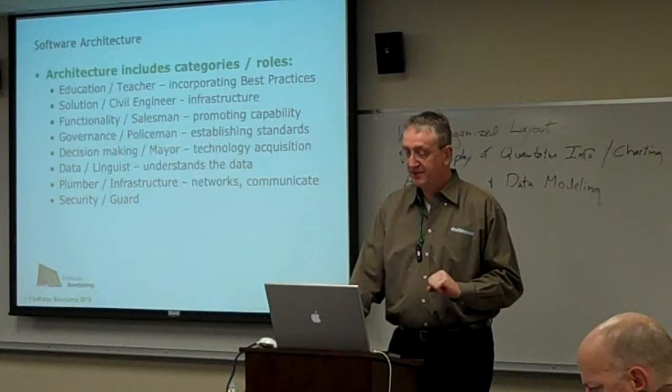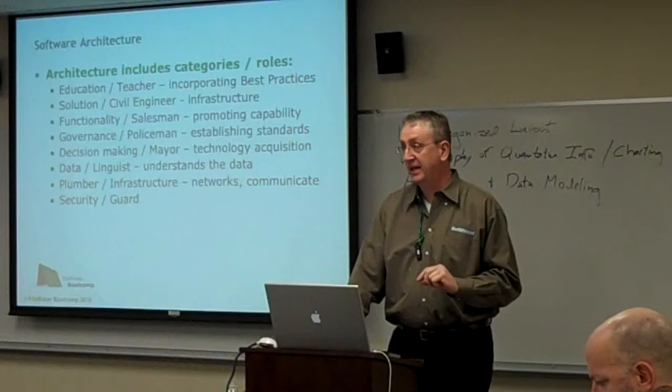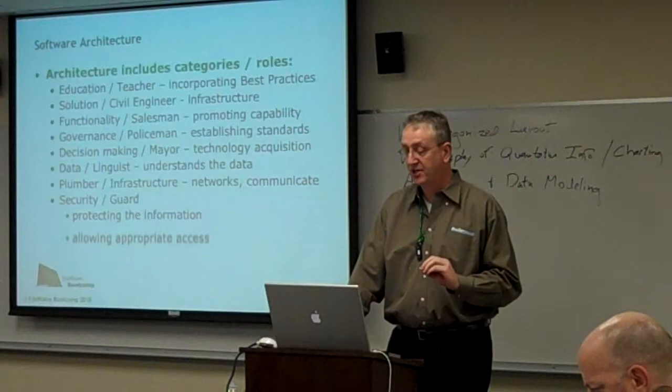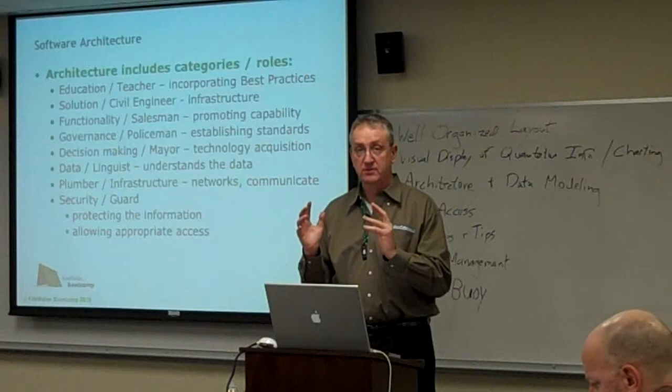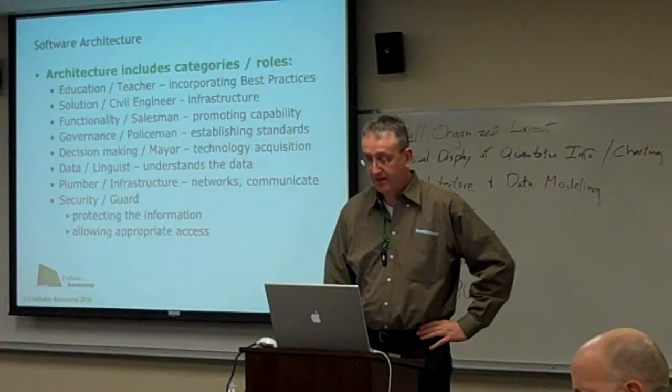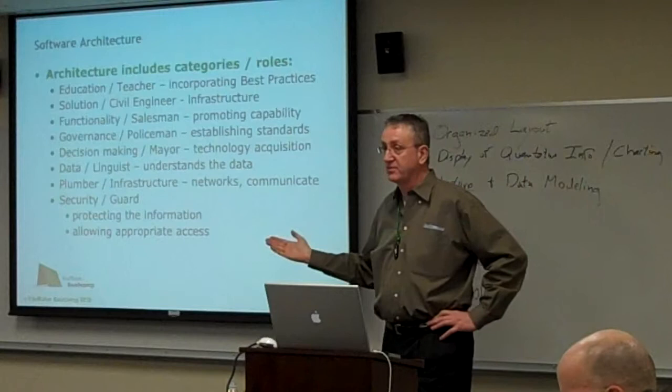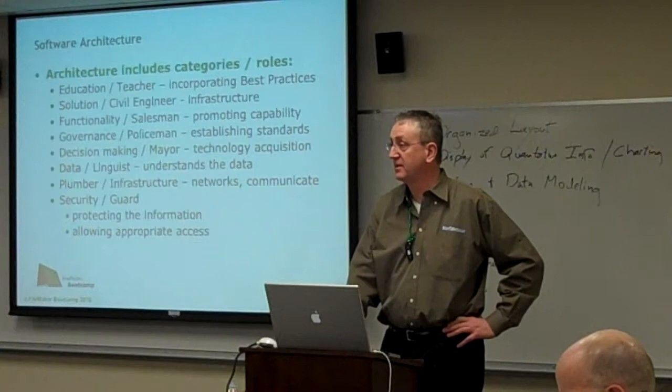Finally, security — last but not least. Architecture includes planning for the security of the system, not only to guard it and protect the information, but to actually control and take into account allowing access to the data. Security can be broken down into two very simple things: protecting it so it doesn't get damaged or stolen, and addressing issues of who can access it at what levels. And all of this, from a category and role perspective, is at a very high level what architecture is.